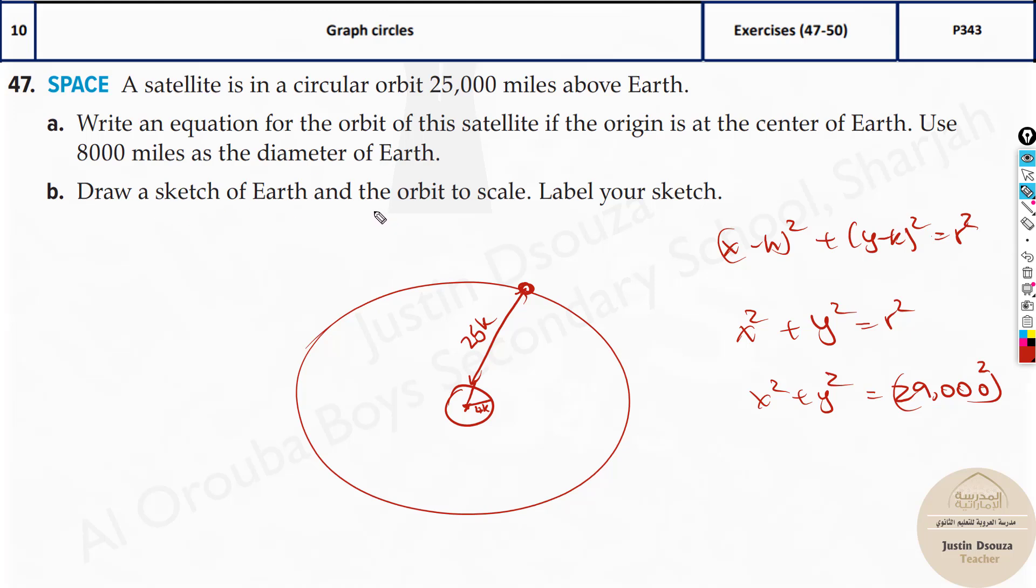Part B is to draw a sketch of the Earth and the orbit to scale. Label your sketch. So you need to just take a scale. Say I'll take 1,000 miles or 5,000 miles as 1 centimeter. Draw a 5 centimeter line. Draw a radius and over here it should be nearly 1 centimeter line. Just rough figure is enough. Draw two circles. This is 4,000. This is 25,000. And that's it. The total radius over here that would be 29,000.